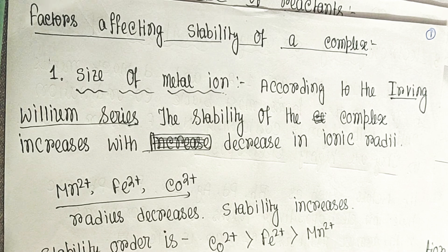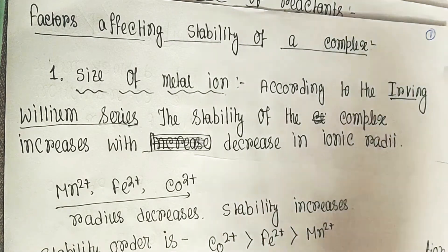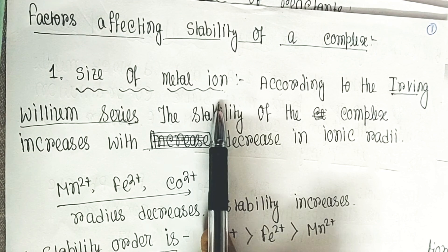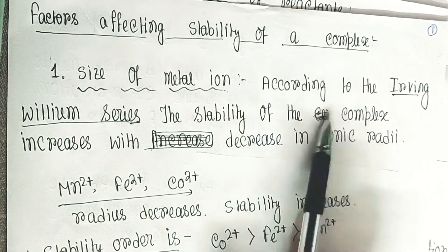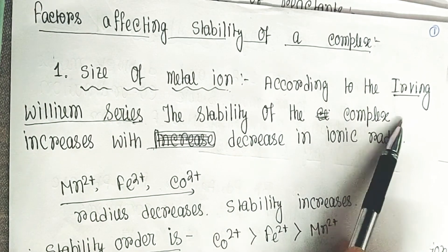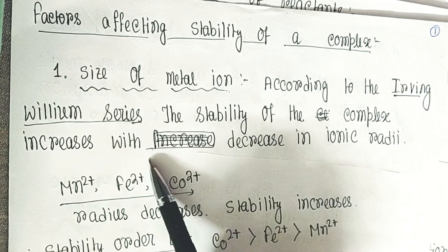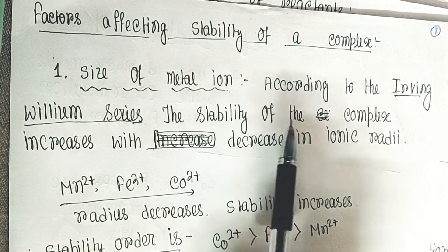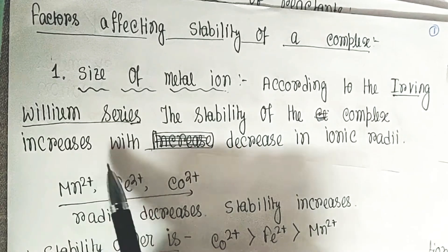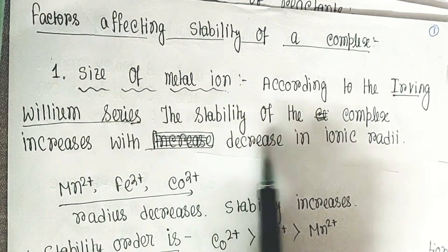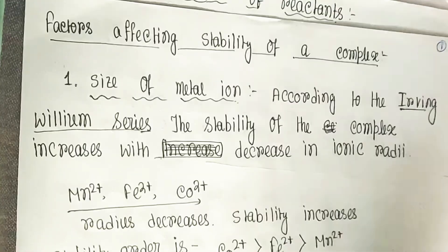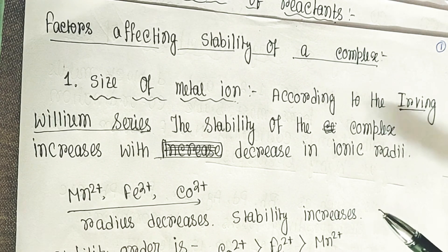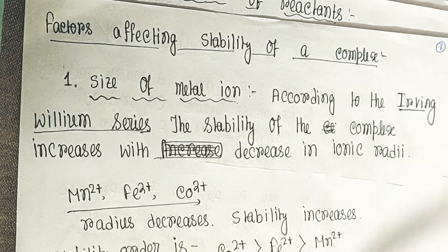The first point is the size of the metal ion. There is a series known as the Irving Williams series. According to this series, the stability of the complex increases with a decrease in ionic radii.